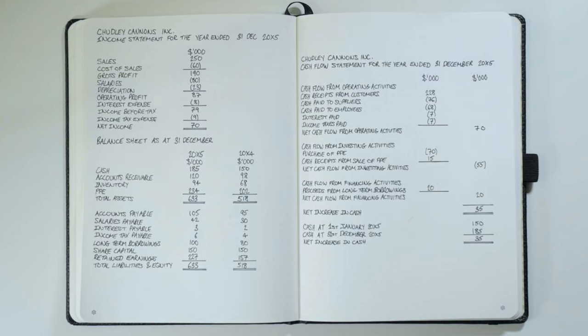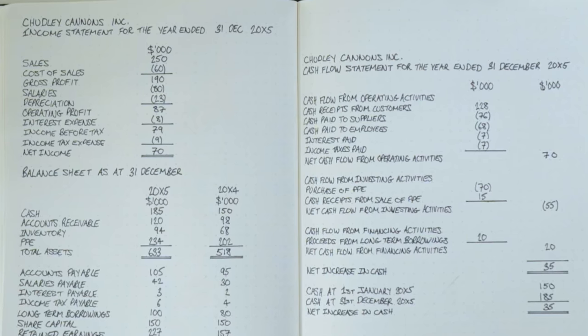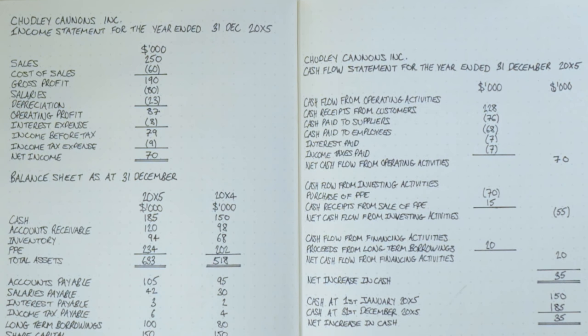Comparing to the income statement, each line relates to one of the expense types: cash paid to suppliers relates to cost of sales, cash paid to employees relates to salaries expense, interest paid relates to interest expense, and income taxes paid relates to income tax expense. There is no depreciation in this cash flow statement because depreciation is a non-cash transaction.